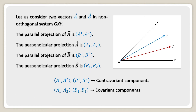Here a upper suffix 1, a upper suffix 2 are the contravariant components, and a lower suffix 1, a lower suffix 2 and b lower suffix 1, b lower suffix 2 are the covariant components.